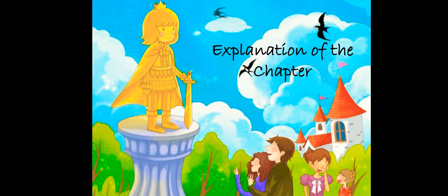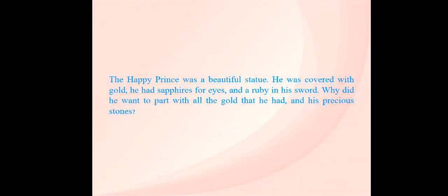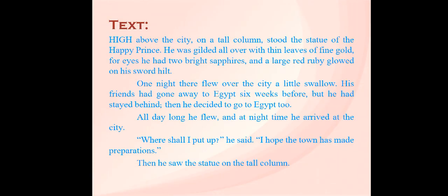Let's start the explanation of the chapter. The Happy Prince was a beautiful statue covered with gold. He had two bright sapphires for eyes and a large red ruby glowed on his sword hilt. The statue of the prince stood on a high platform overlooking the city.